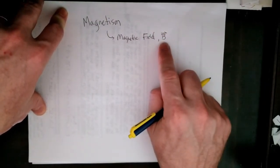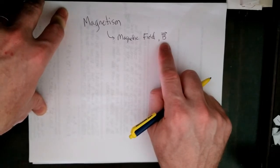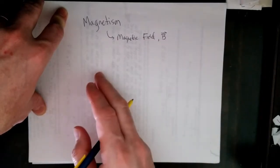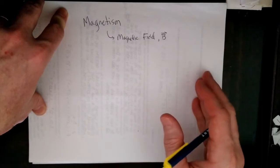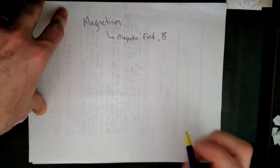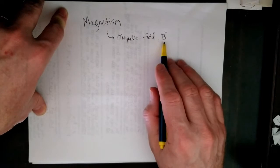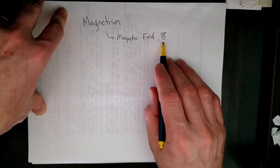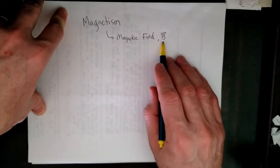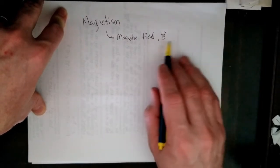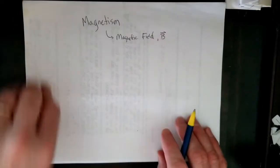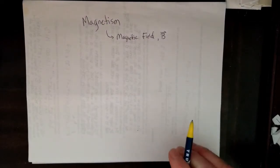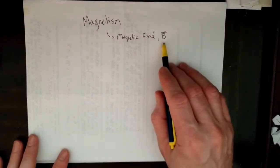And why B? I suspect it comes from whoever was doing this first used A for the first one, B for the next one, C for the next one in terms of variables. Anyway, it's stuck. There are some that will give this a slightly different name, magnetic flux density, and use H for the magnetic field. This and H have different meanings. They are very much related to each other, but almost every textbook until you get into graduate level will use B.